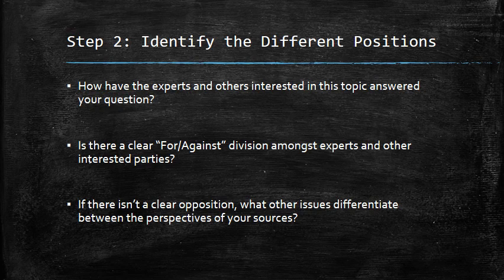Now that you know the question you're trying to answer, you want to identify what the different positions are regarding this topic. How have the experts and others interested in this topic — the sources you've read — answered this question? It's helpful to see if there is a clear for-or-against division among the experts and other interested parties. In some topics, especially particularly controversial ones, there's a clear for-or-against division. In other topics, however, it might not be a clear opposition — it might just be a difference of emphasis or focus.